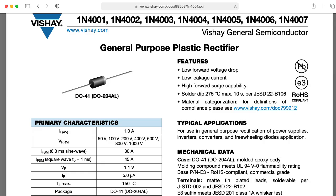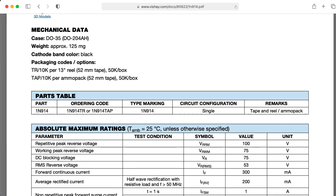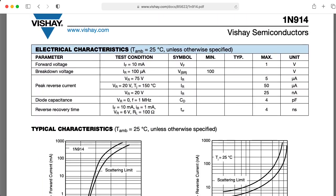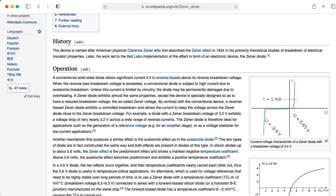Junction diodes include power diodes like the 1N4001 and small signal diodes like the 1N4148 and the equivalent 1N914. And technically, it also includes the category of Zener diodes, but we use Zener diodes in a different way, so I'm going to talk about those in another lecture.